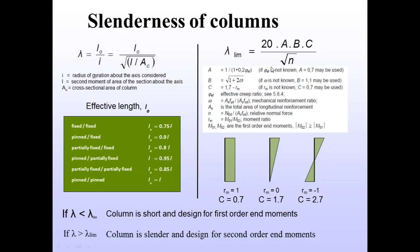In column design, the parameters to be checked are the slenderness ratio — the actual slenderness ratio and the allowable slenderness ratio — and the effective length based on end conditions. We compare the actual slenderness ratio with the allowable slenderness ratio. If the actual is less than the allowable, the column is short and designed for first-order moment. If the actual is greater, the column is designed as a slender column.